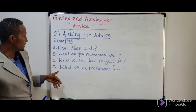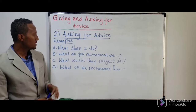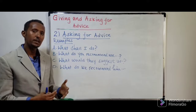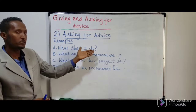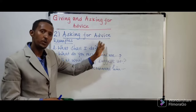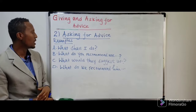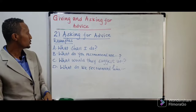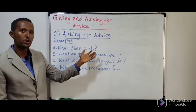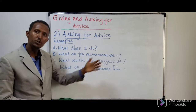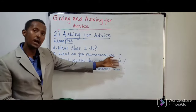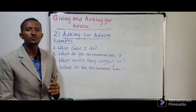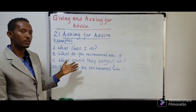Look at these four sentences. Though they are different in wording, they are used almost for similar functions — that is, asking for advice. 'What shall I do?' You can extend this question based on the situation you have, for example: 'What shall I do in order to pass the exam?' 'What do you recommend me to do?' 'What would they suggest us?' 'What do we recommend him?' These kinds of sentences are used to ask for advice.